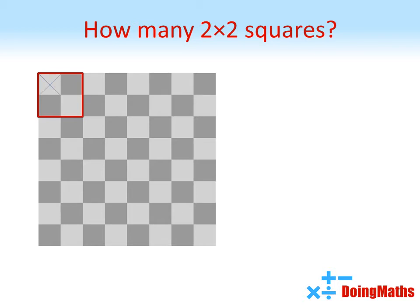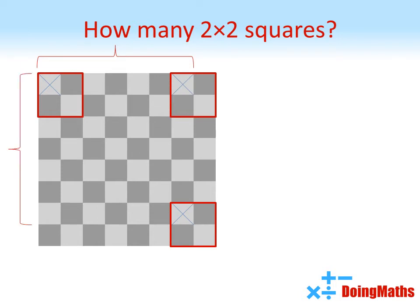The furthest right our square can move puts the cross in the second to last column along. So there are 7 columns that this cross can go in. The furthest down we can put the square puts the cross in the second to bottom row. Meaning there are only 7 rows that this cross can fit in.